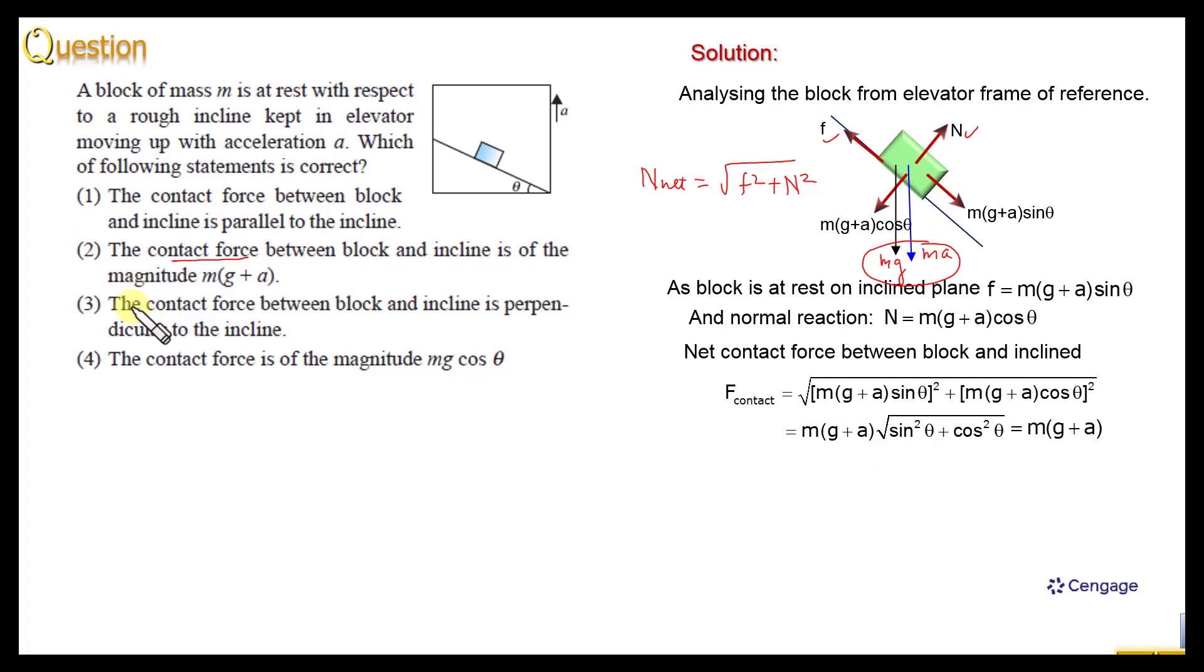Now, we can find the option. Second option should be correct, right? Because it is given the contact between the block and inclined is having magnitude mg plus a. So this is the correct option.